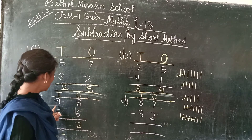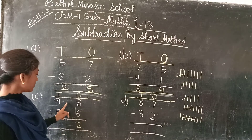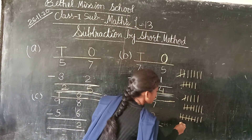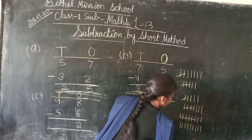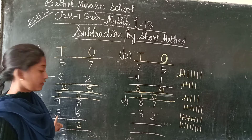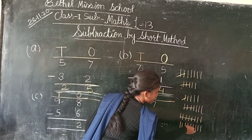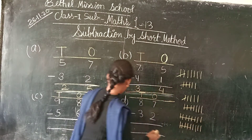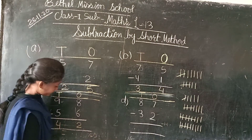Next we have to subtract tens from tens — means 9 tens minus 5. So first we will draw 9 lines: 1, 2, 3, 4, 5, 6, 7, 8, 9. Minus 5, so we have to cut 5 lines: 1, 2, 3, 4, 5. How many are left? 1, 2, 3, 4. So we will write here 4.